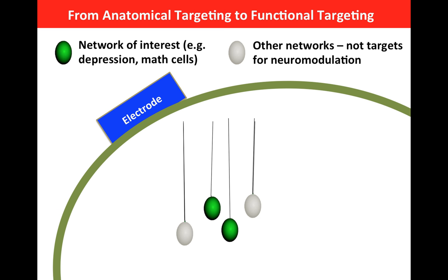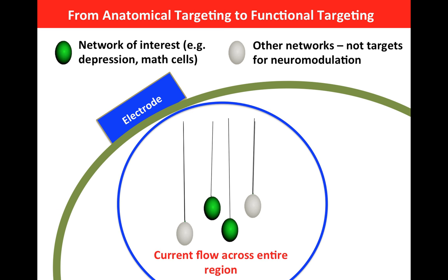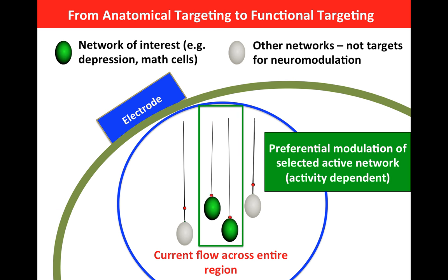I just described how we can go from anatomical to functional targeting. With anatomical targeting, we're always going to be limited in our ability to deliver current to one group of cells while not stimulating the others. With functional targeting, we assume that the cells we want to stimulate have somehow become active due to, for example, practicing something, getting rehabilitation, thinking something. We've activated a network in the brain, and now that network becomes susceptible to stimulation. The cells that are not active don't get affected by stimulation, and the cells that are active do get affected.